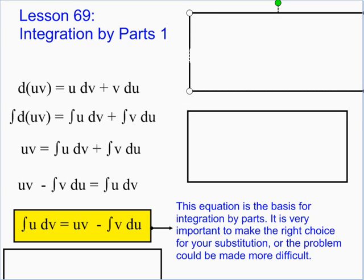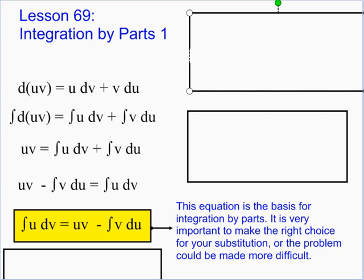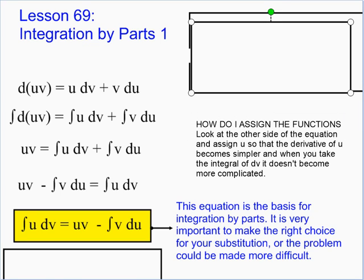This equation is the basis for integration by parts. It's important to make the right choice for your substitution of u and dv. If you don't make the right substitution you can make it more difficult — and if that happens you go back and re-substitute. We assign u so the derivative of u becomes simpler. When you take the integral of dv it shouldn't become more complicated. So this formula says: to find the integral of two functions multiplied, use this formula, and the integration on the right should be simpler than the original.